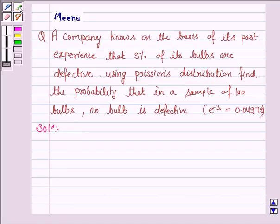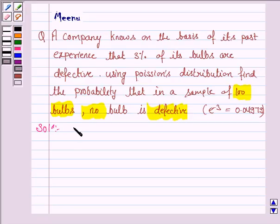Here we have to find the probability that in a sample of 100 bulbs, no bulb is defective. So here N is 100 and the probability of success, that is P, that is the probability of choosing a defective bulb is 3% which is equal to 3 by 100.